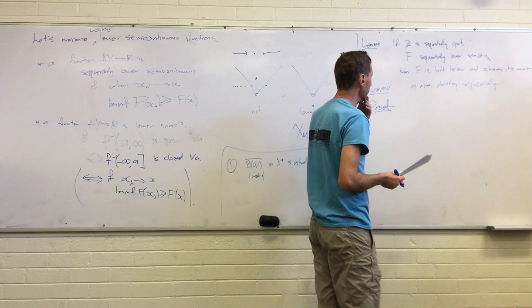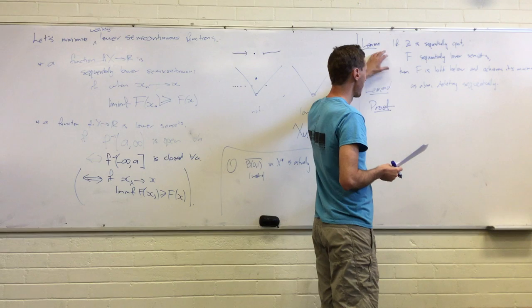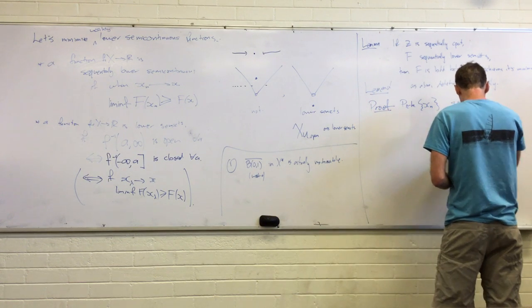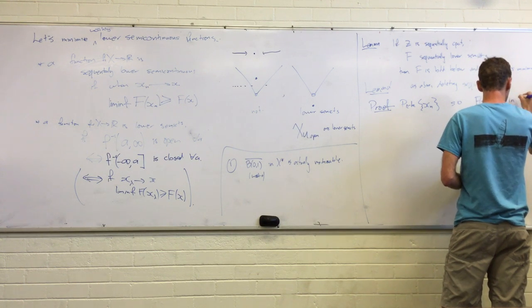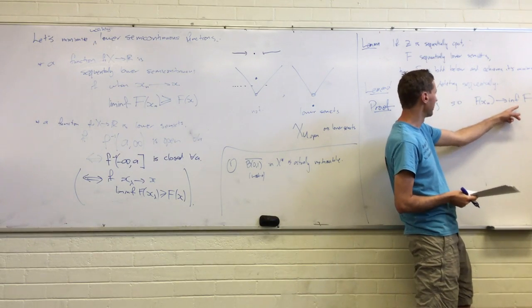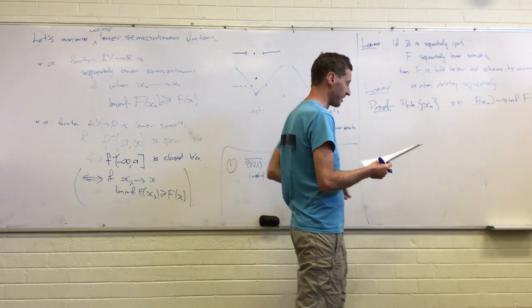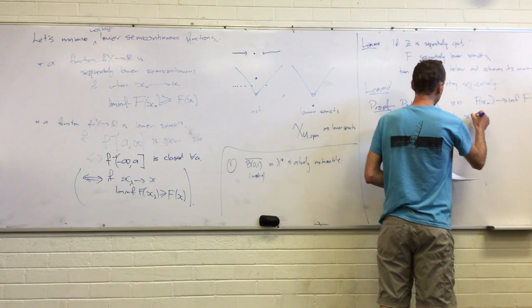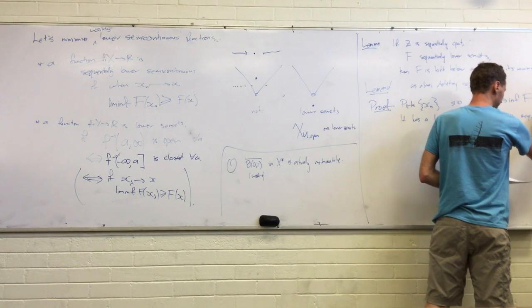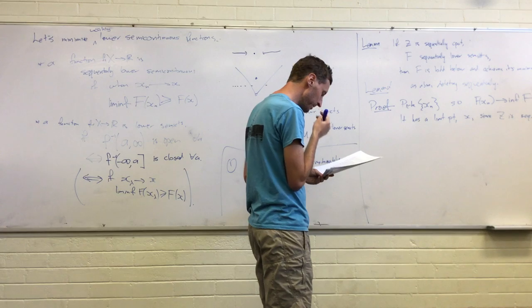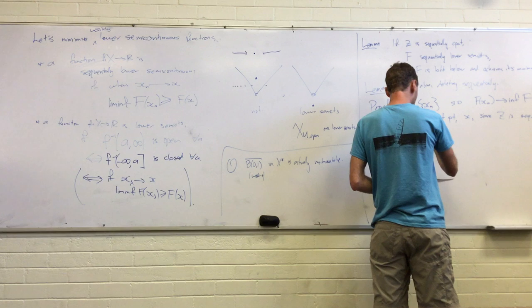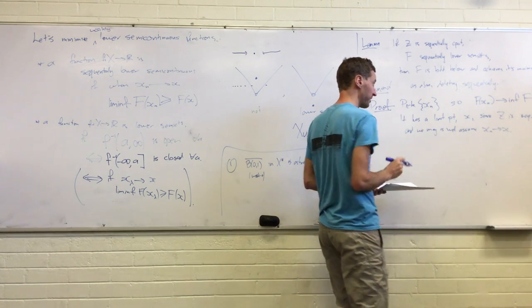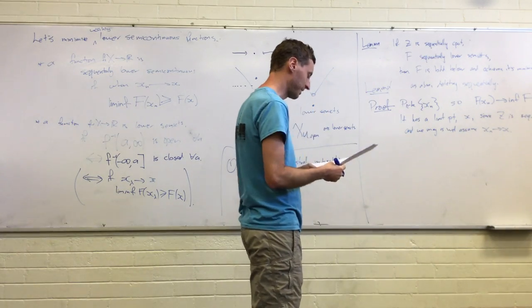Okay, so let's say we've got a sequentially compact space. So here, let's just give ourselves a sequence xn. So, choose xn converging to the infimum of f. Possibly, I mean, it could be negative infinity. If that is negative infinity, we don't get much. Okay. It has a convergent subsequence, so some x. It's sequentially compact, which gives some accumulation point of that sequence. And we may as well assume, just by passing to the subsequence, it actually has xn going to x.